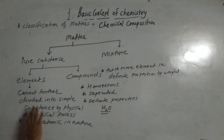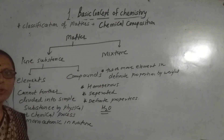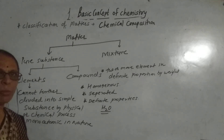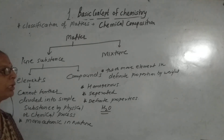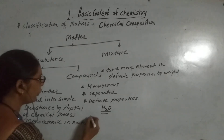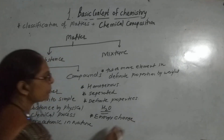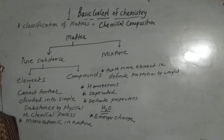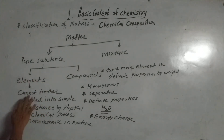The property of the compound is different from its elements — water is formed from hydrogen and oxygen, but water is not combustible and does not support combustion, whereas hydrogen is combustible and oxygen supports combustion. Elements cannot be further divided — this is the basic difference between elements and compounds. Elements are monoatomic in nature. Compounds are not monoatomic; they may be diatomic, polyatomic, etc., because compounds are made up of two or more elements. During the formation of a compound, energy may be evolved or absorbed.